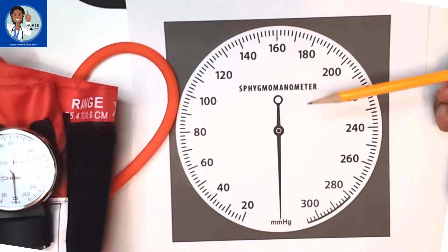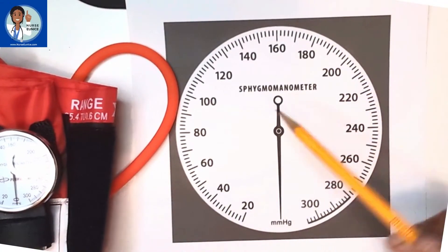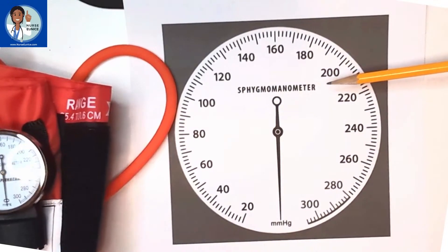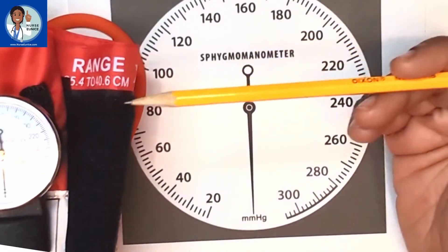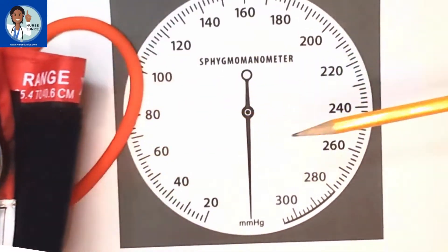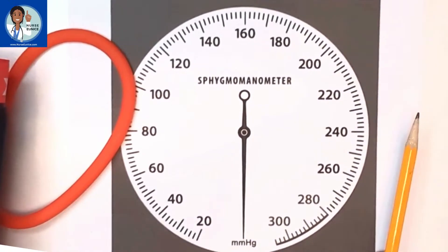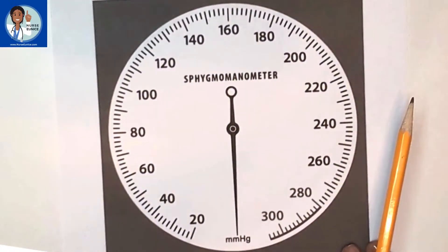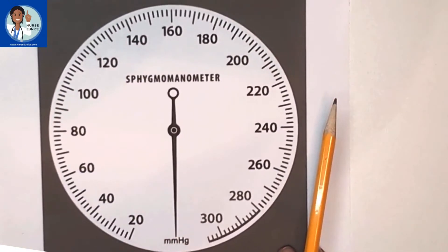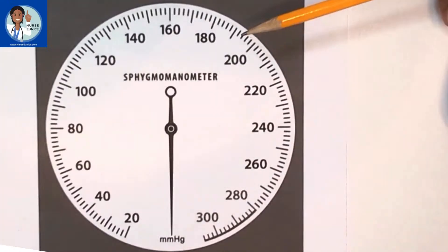This is an illustration of the gauge on a sphygmomanometer or blood pressure cuff. Because it's going to be harder to read on the actual cuff itself, we're going to use this drawing to show you how to read the gauges so that you get your numbers accurate when you're taking someone's blood pressure.